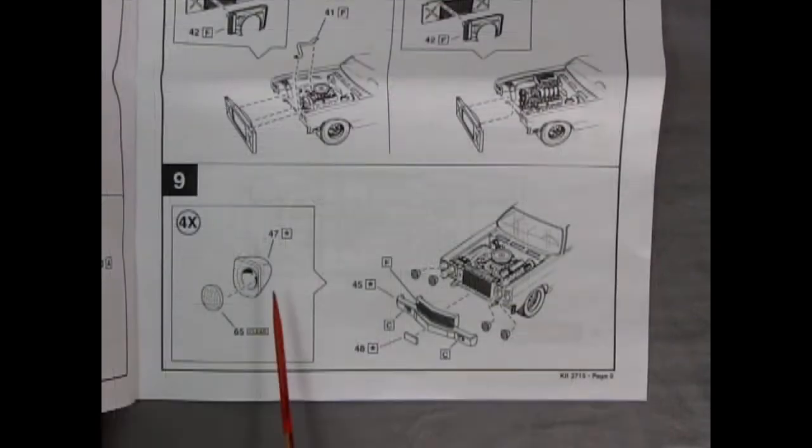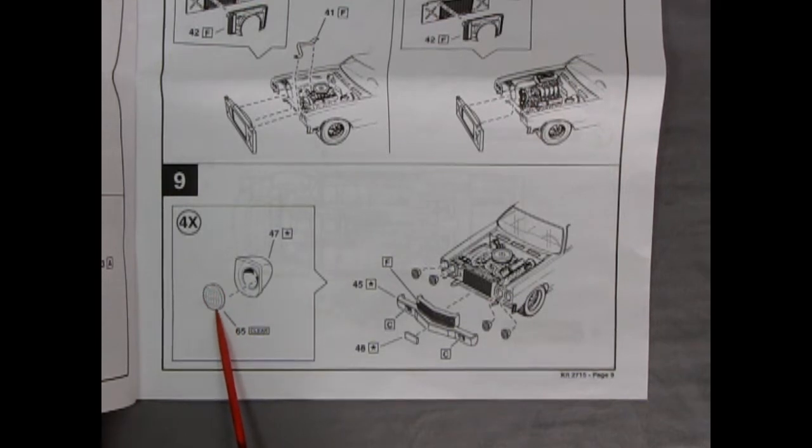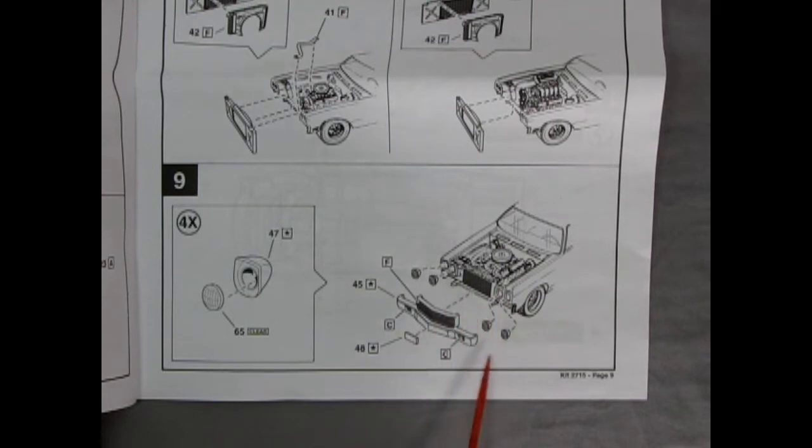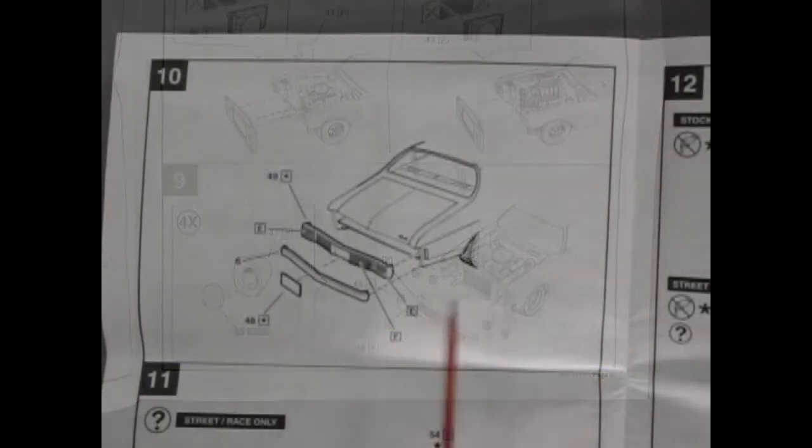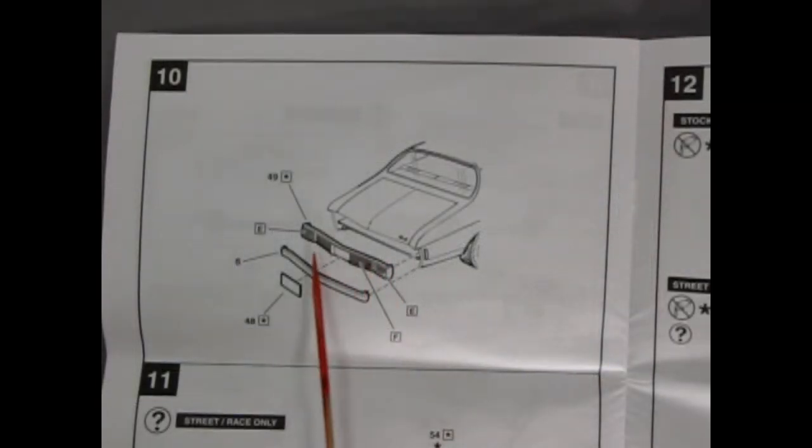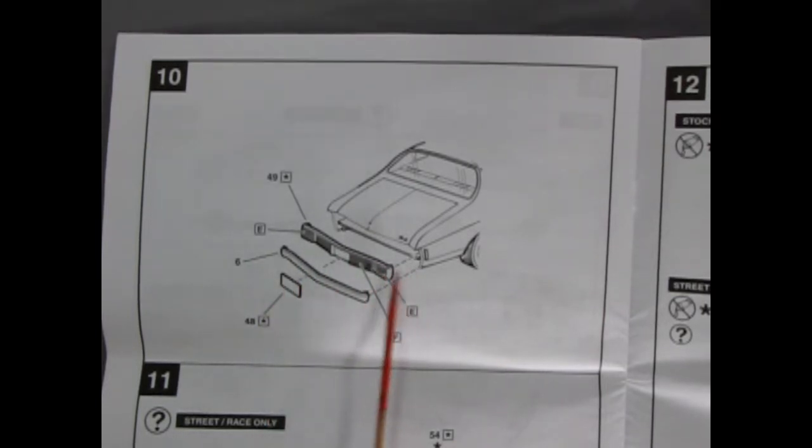Panel nine shows our headlights, the chrome bezels going in, as well as our clear glass components. And then those go into the front of the car, via the front of the car, as well as our bumper and our license plate. Panel 10 is showing our bumper, rear bumper going into the back of the body. You will have to paint the tail lights with some red. There's this little brace that goes across underneath. And of course our license plate.